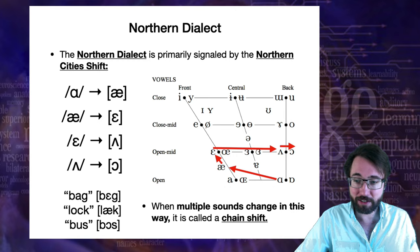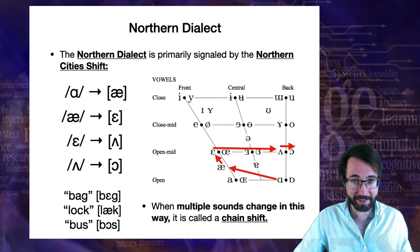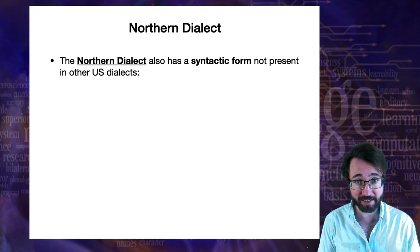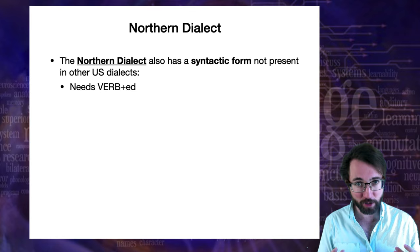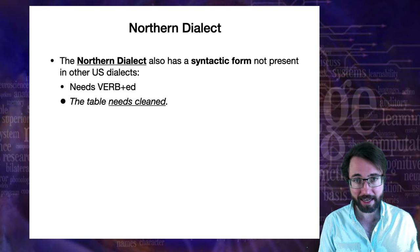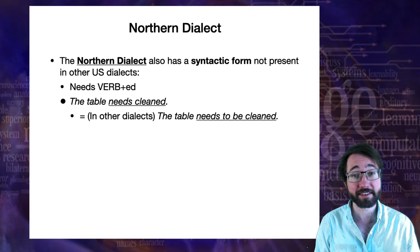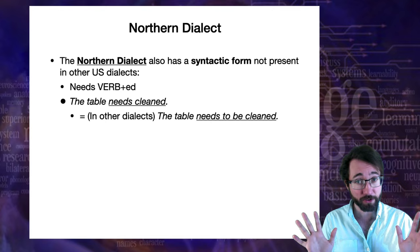The Northern dialect also has a syntactic form not present in other U.S. dialects — remember, dialects are not just accents, they also encompass variation in syntax. In the North you can use what's called the needs-verbed construction: you can say the table needs cleaned, which in other dialects would be the table needs to be cleaned. In most U.S. English dialects, the table needs cleaned sounds ungrammatical, but in the Northern dialect it's perfectly normal and used quite commonly.